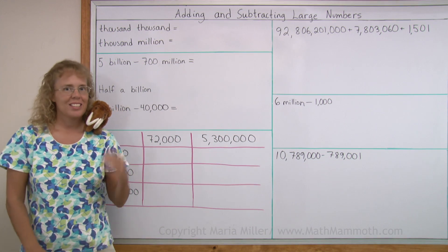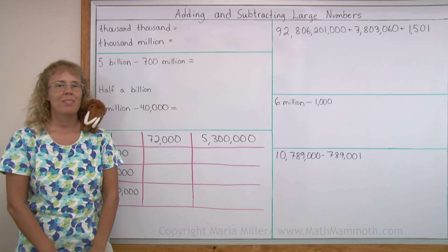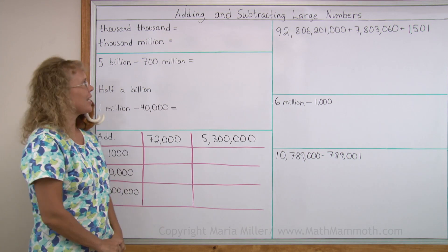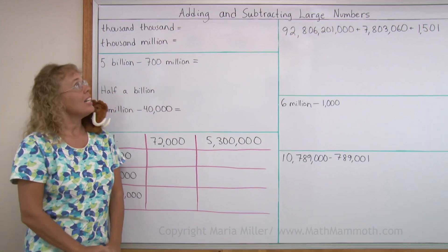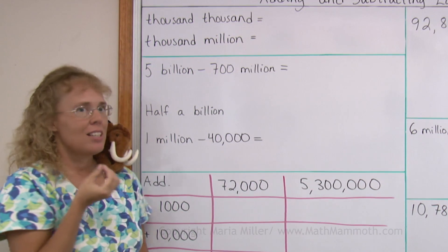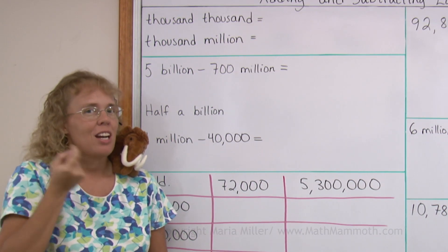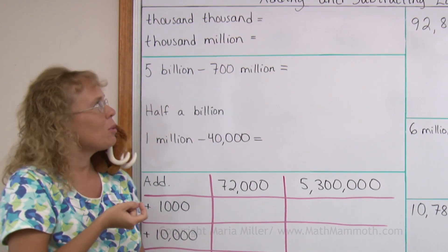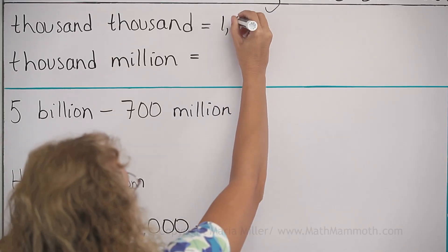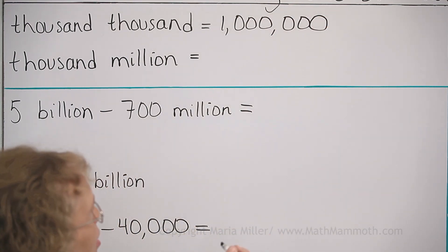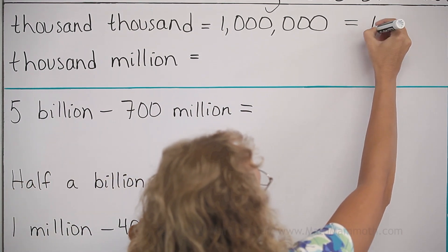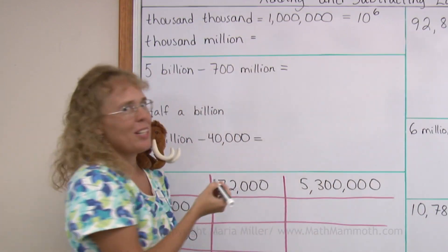Hello, my name is Maria and this is Mathi, my mascot. In this lesson we're studying adding and subtracting large numbers, and we're going to do some mental adding and subtracting. The basis for that will be that if you have a thousand thousands, that is one million. I'm also going to write it as a power of ten as we learned in a previous lesson — this is ten to the sixth power.